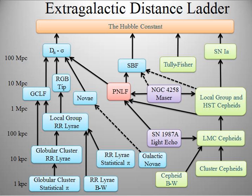As detected thus far, NGC 3370, a spiral galaxy in the constellation Leo, contains the farthest Cepheids yet found at a distance of 29 Mpc. Cepheid variable stars are in no way perfect distance markers: at nearby galaxies they have an error of about 7%, and up to a 15% error for the most distant.